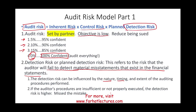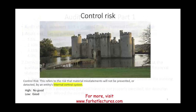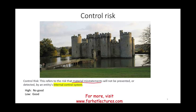Let's discuss control risk. Control risk is the risk that a material misstatement — an error, fraud, or some sort of mistake — will not be prevented or detected by the entity's internal control system. Think of your accounting information system residing inside a castle, and the castle itself is what prevents errors and fraud from occurring. The castle is the internal control system.